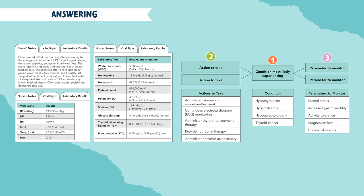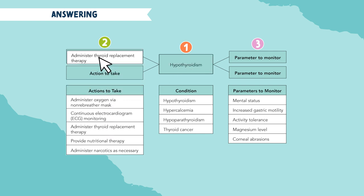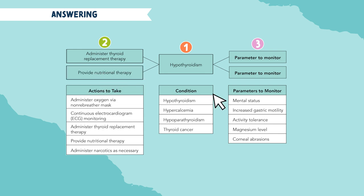Now that you've looked at all the information given to you, you're ready to answer the question. You always need to start with the middle box specifying the patient's condition — you won't be able to answer any other questions until you do this. After you decide what condition your patient is most likely experiencing, drag and drop your answer from the column to the box. Quick reminder that client and patient are used interchangeably; on the NCLEX, you'll most likely see client being used.